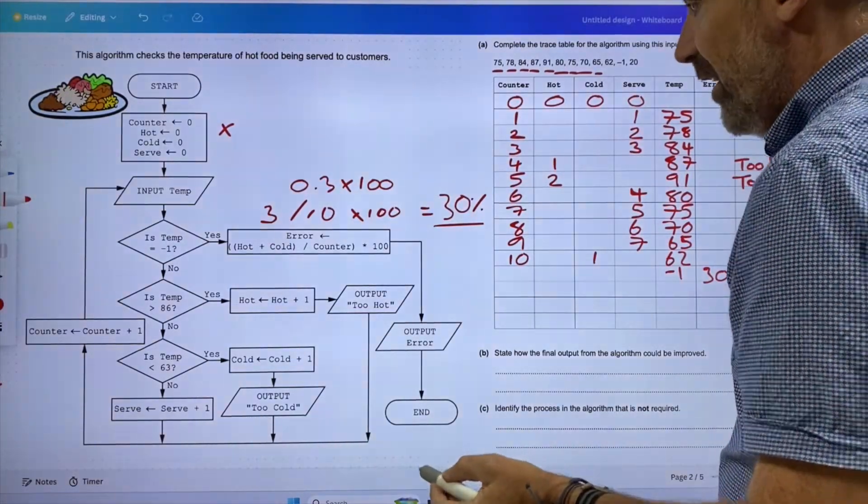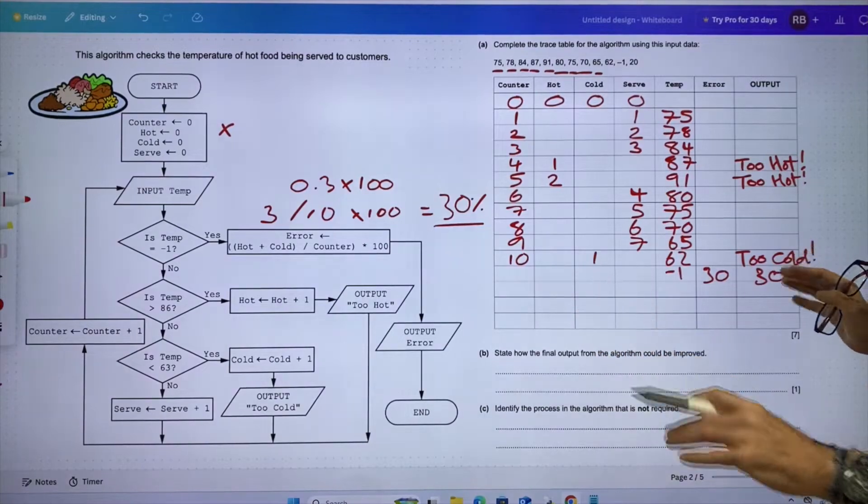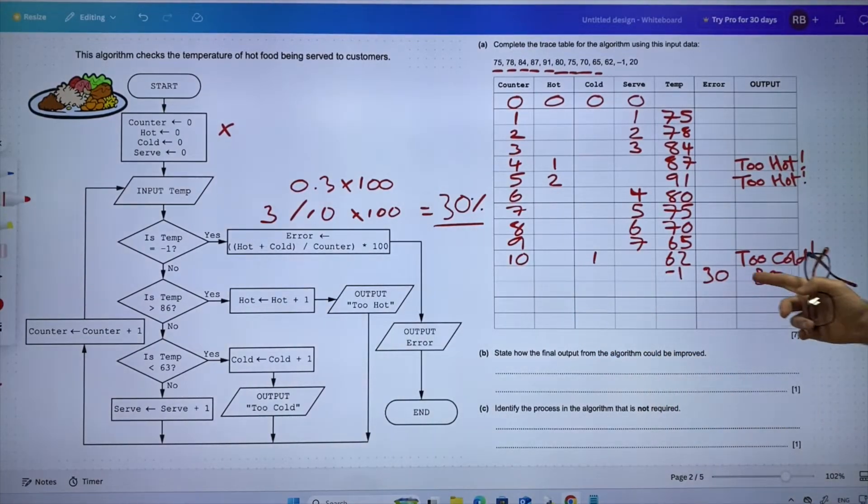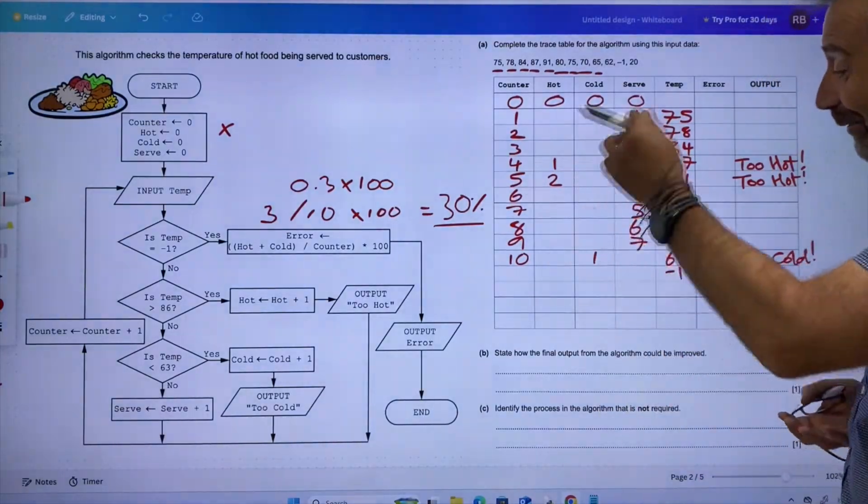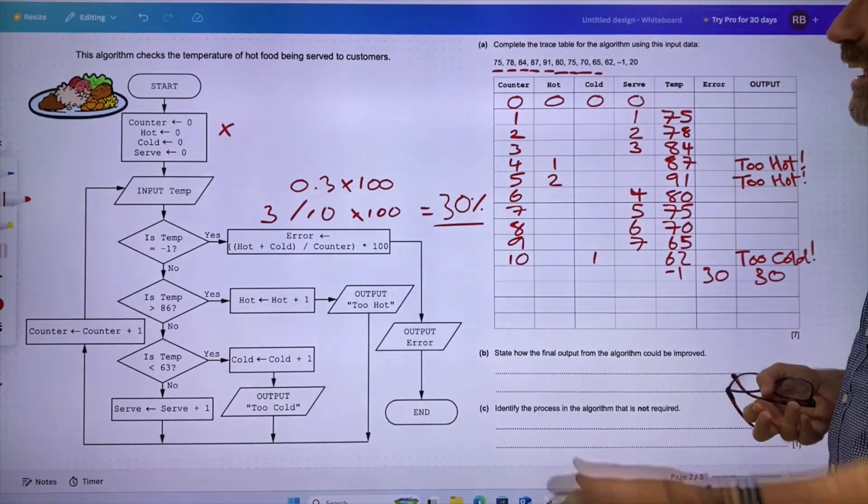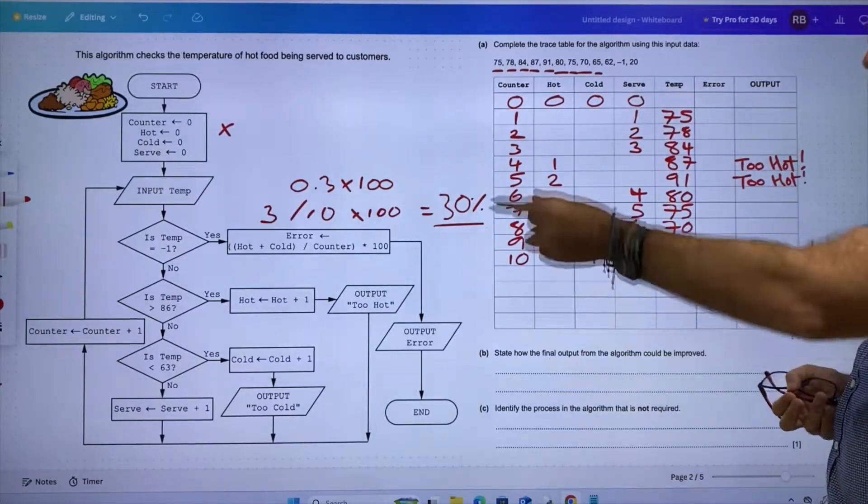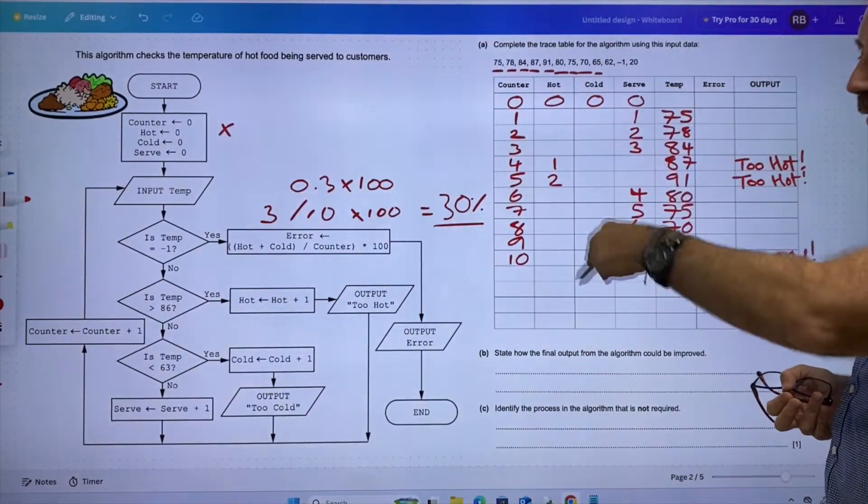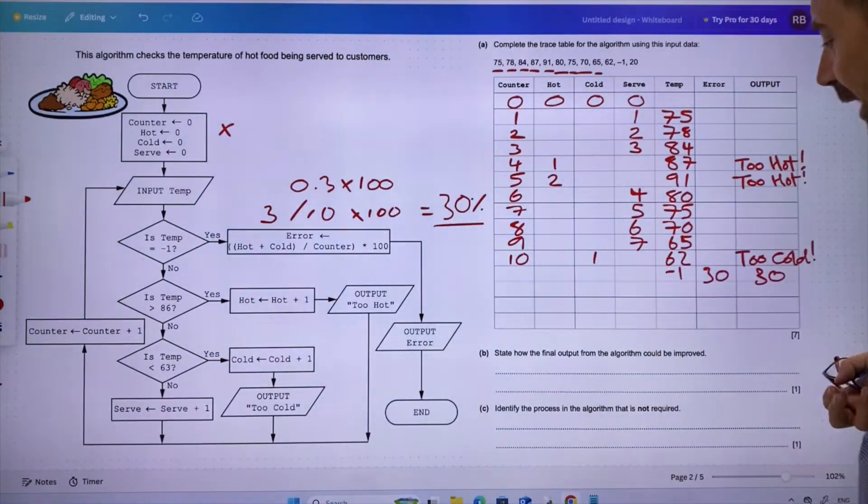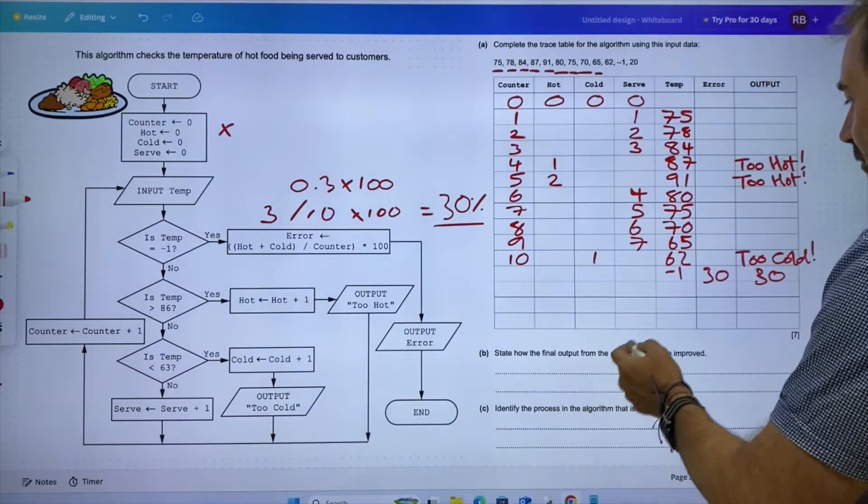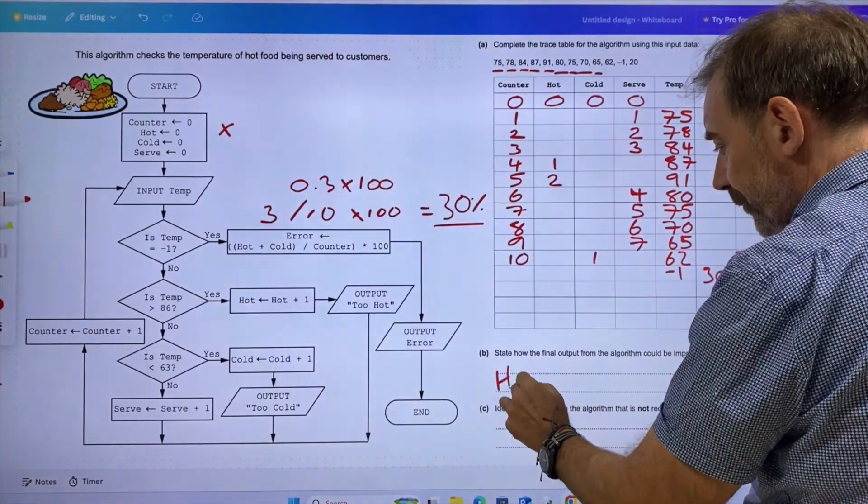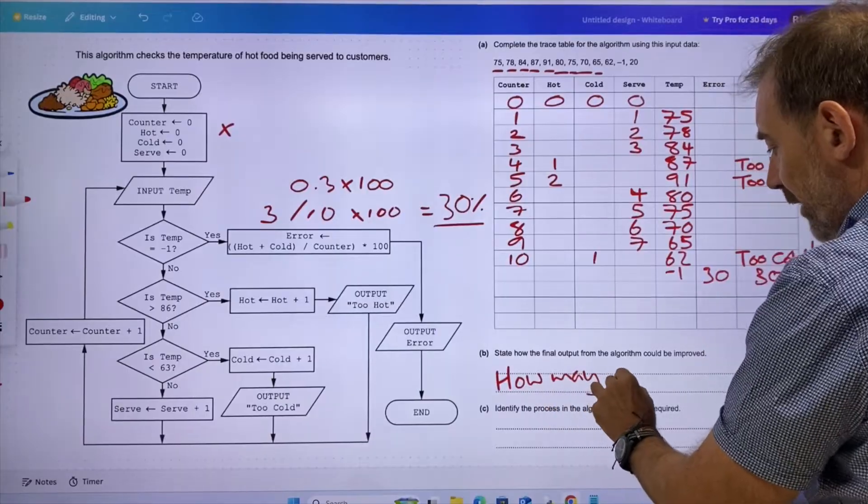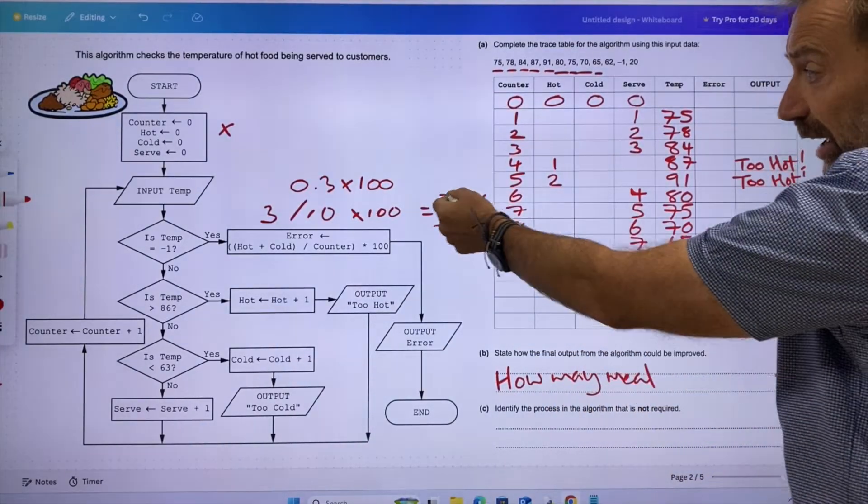And that is it—that ends the algorithm. So I hope that makes sense to you. These are—I mean, seven marks, it should really take seven minutes, so I don't know how long that took. But once you get into the rhythm, you see the pattern—that's where you're going to look for the pattern. So state how the final output from the algorithm could be improved. Well, it could, because we're doing percentages, it could say how many meals were either served or not served.